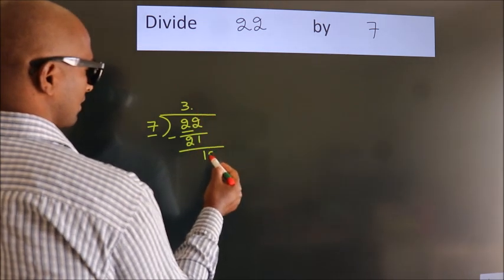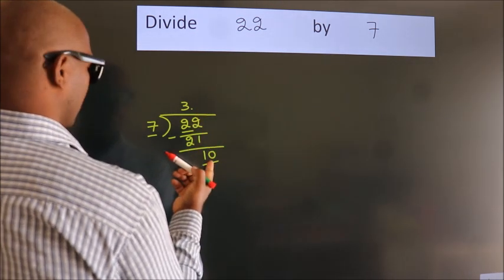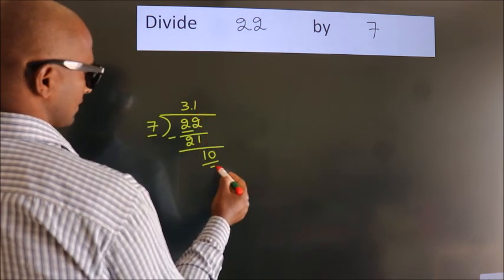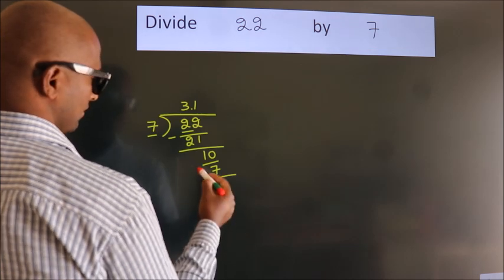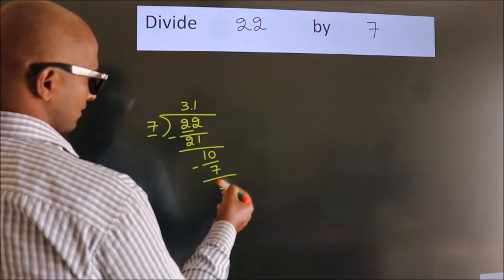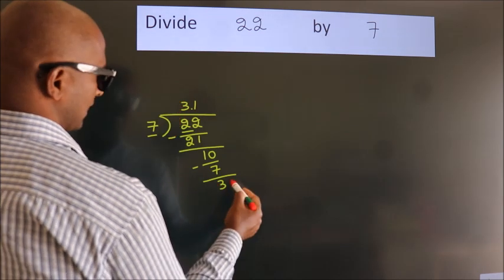is put a dot and take zero. So 10. A number close to 10 in the seven table is seven ones, 7. Now we subtract and get 3. After this, we already have the decimal, so directly take zero.